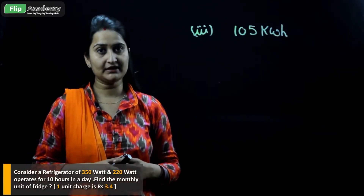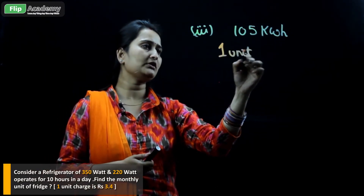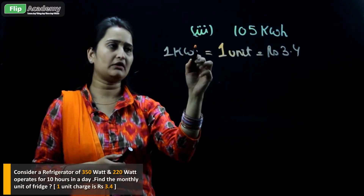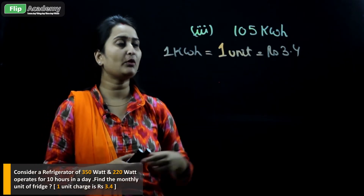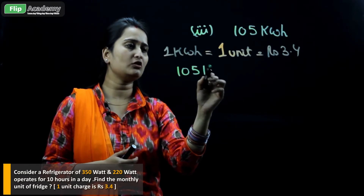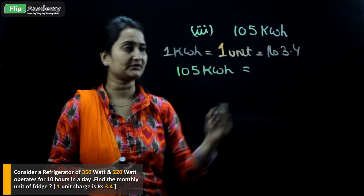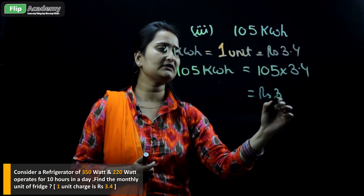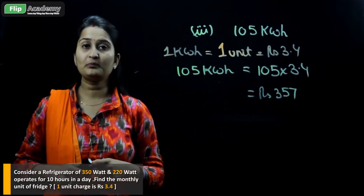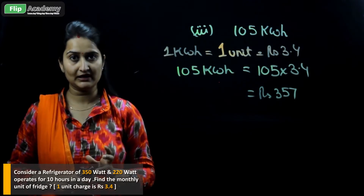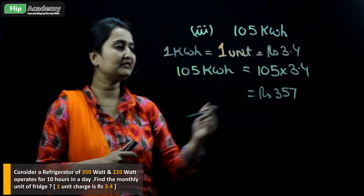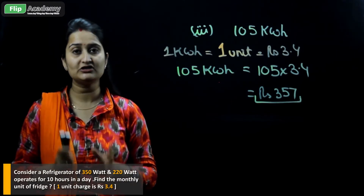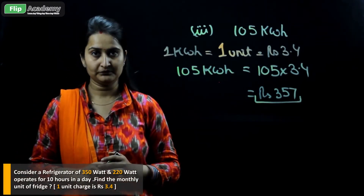It is given that one unit equals rupees 3.4, and one unit means one kilowatt hour. So one kilowatt hour equals rupees 3.4. Therefore, 105 kilowatt hours equals 105 multiplied by 3.4, which gives rupees 357. So rupees 357 is the cost of the fridge when it is used 10 hours per day — that is, in one month or 30 days, you have to pay rupees 357 for the fridge.